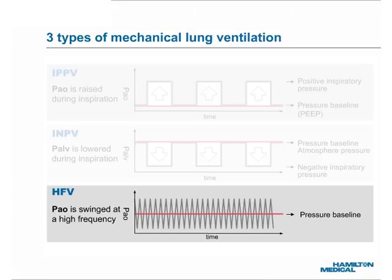The bottom graph shows the pressure waveform of HFV, or High Frequency Ventilation. Using this principle, the airway opening pressure, PAO, is swung in a defined range around a defined pressure baseline at a defined rate, which is at least 150 cycles per minute. Of the three principles, IPPV is the foundation of most modern ventilators, regardless of brand and model. From now on, whenever we say artificial lung ventilation or mechanical ventilation, we are referring to ventilation according to the principle of IPPV.